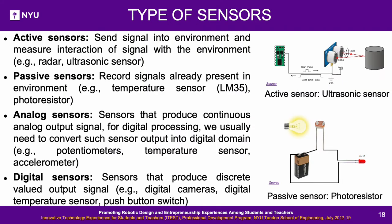Types of sensors: a passive sensor detects and responds to input from the physical environment — such as vibrations, light, radiation, or heat — without requiring external power. An active sensor requires an external source of power to operate. Analog sensors produce a continuous analog output signal; for digital processing, the output must be converted to the digital domain. Examples include potentiometer, temperature sensor, and accelerometer. Digital sensors produce discrete valued output signals; examples include digital cameras, digital temperature sensors, and push button switches.